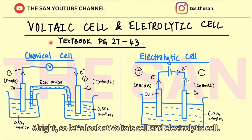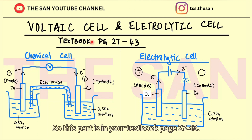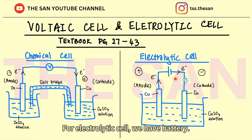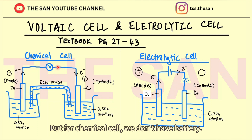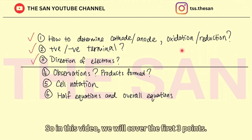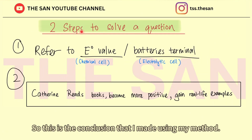Let's look at voltaic cell and electrolytic cell. This part is in your textbook on page 272–243. Voltaic cell we also call chemical cell. For electrolytic cell, we have a battery, but for chemical cell, we don't have a battery. These are the basic things you have to master under these two subtopics. In this video we will cover the first three points — this is the conclusion I make using my method.